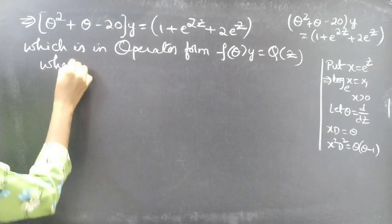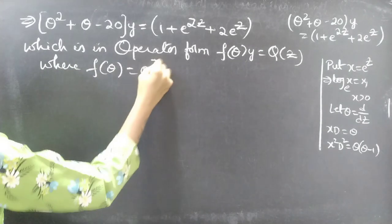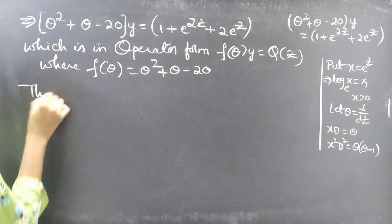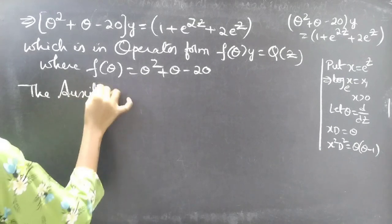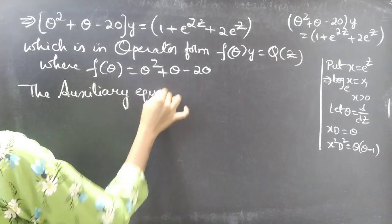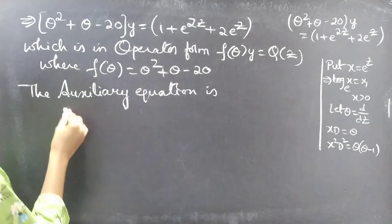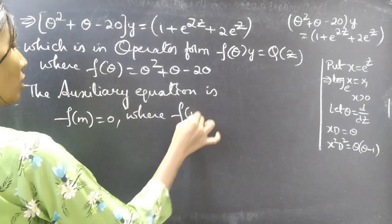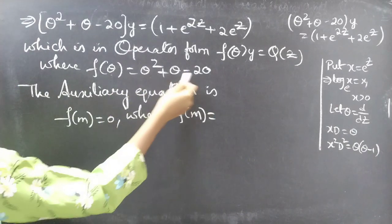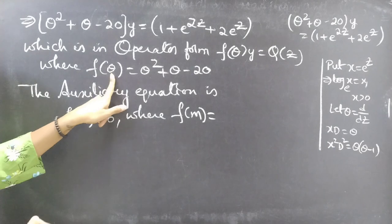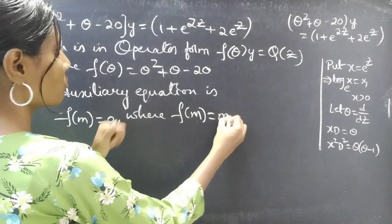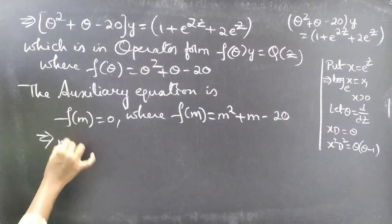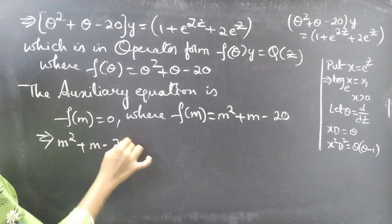The auxiliary equation is f of m equal to 0, where f of theta equals theta squared plus theta minus 20. We replace the differential operator theta by m, so we get f of m equals m squared plus m minus 20. Then our auxiliary equation becomes m squared plus m minus 20 equals 0.